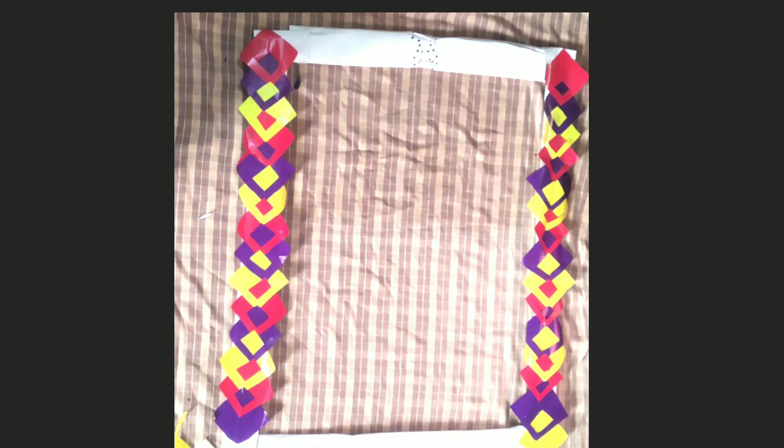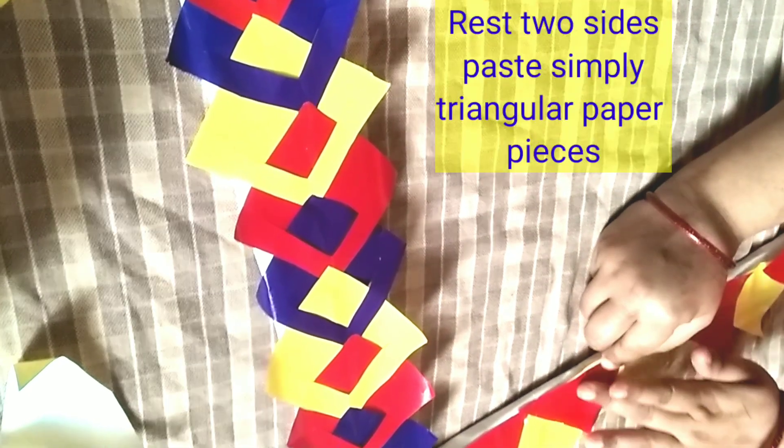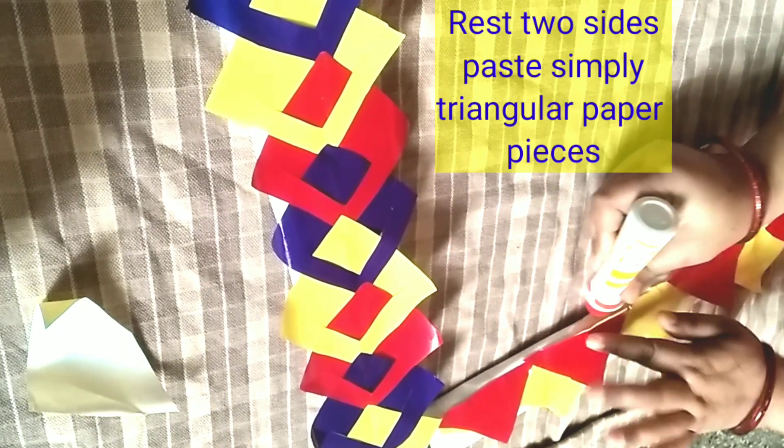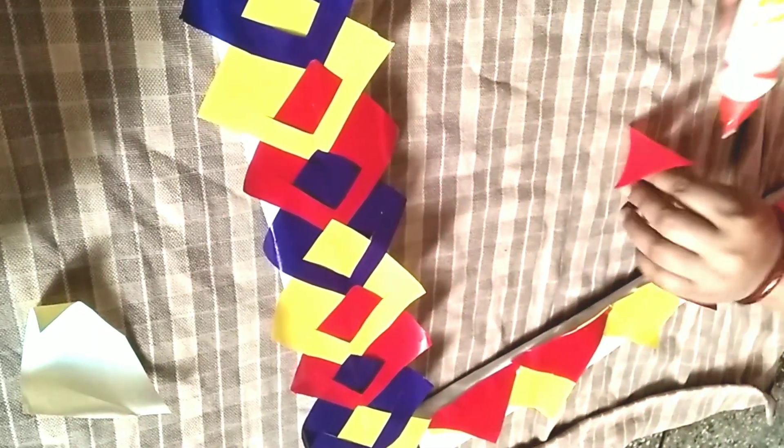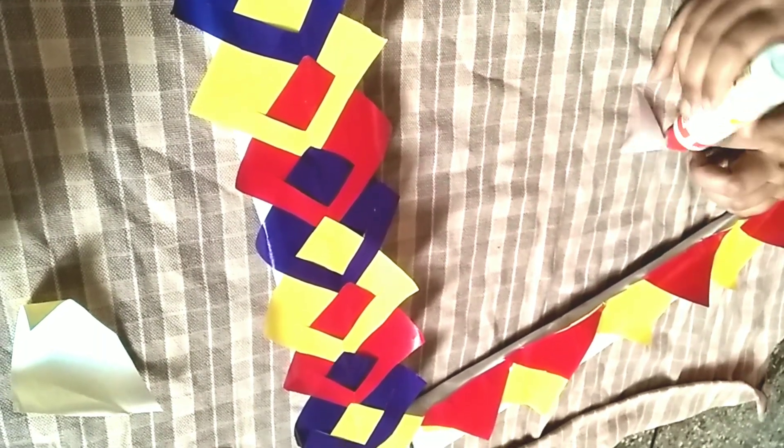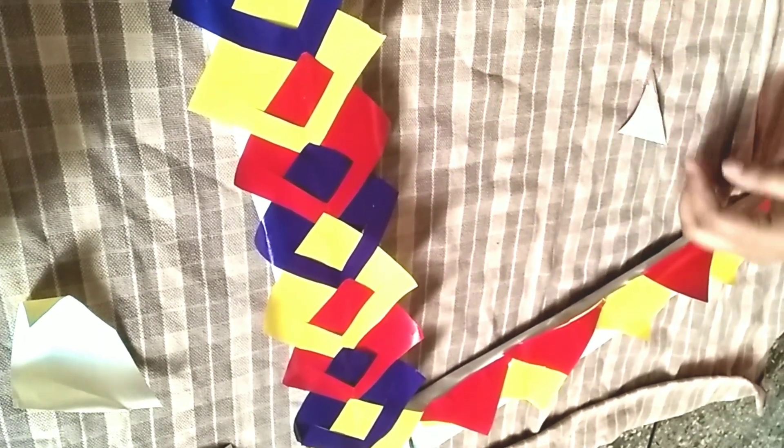The two sides are ready. Now for the next two sides, take the triangular paper and paste it simply over it. Here I am using red and yellow. You can use any color of your choice.